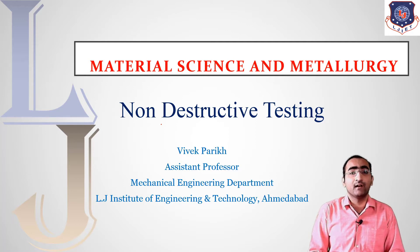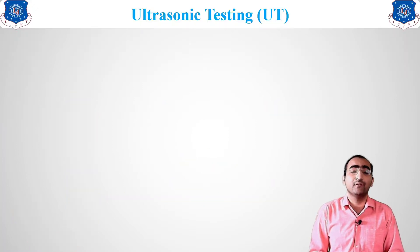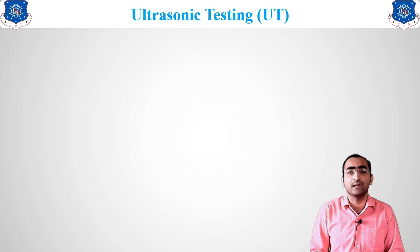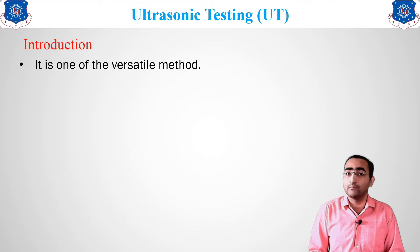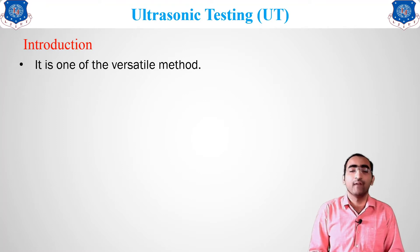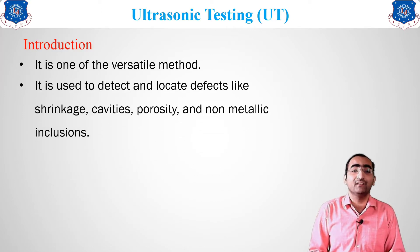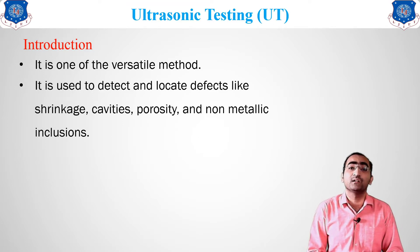Moving forward to our next topic — the second method known as Ultrasonic Testing, or UT for short. It is one of the most versatile NDT methods. Ultrasonics basically refers to sound waves. We use sound waves for the detection of defects. Ultrasonic testing is used to detect and locate defects like shrinkage, cavities, porosity, and non-metallic inclusions.